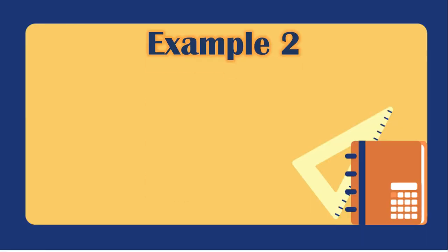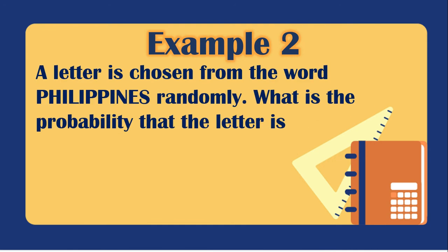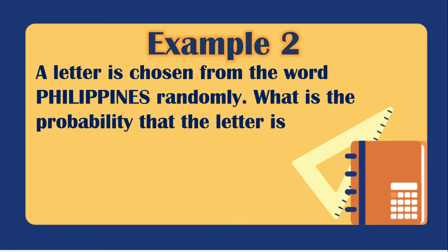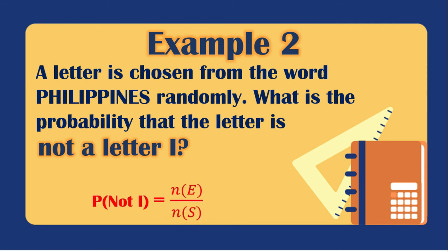Example 2: A letter is chosen from the word Philippines randomly. What is the probability that the letter is a consonant? The favorable outcome is 7, since there are 7 consonants in Philippines, over the total of 11. So the probability of getting a consonant is 7/11. What is the probability that the letter is not the letter I? The favorable outcome is 8 letters that are not I, over 11, giving 8/11.